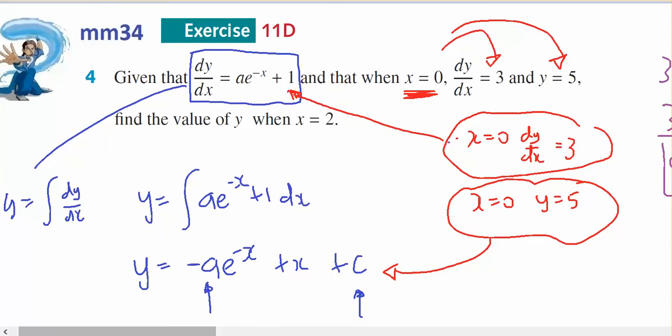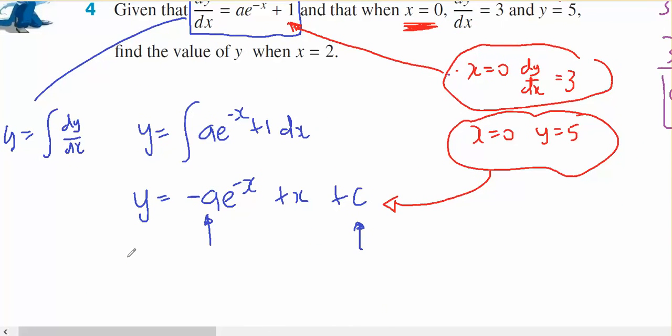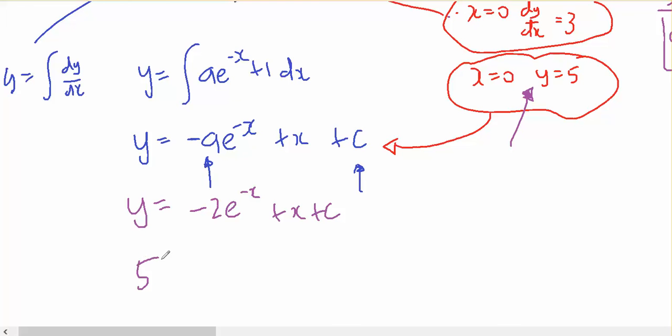And then I now know if a equals 2, that y equals minus 2 e to the minus x plus x plus c. Now I can use this piece of information. That y equals 5 when x equals 0, minus 2 e to the 0 plus 0 plus c. 5 equals minus 2 plus c. C equals 7.